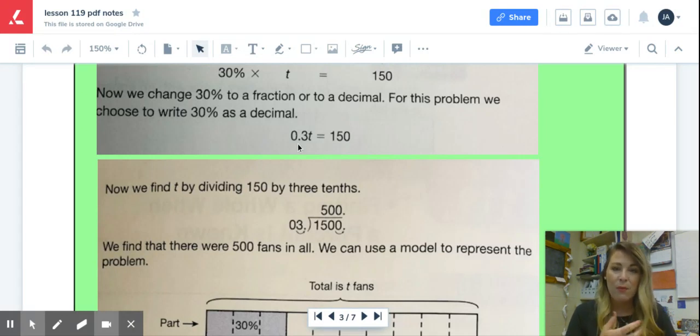So in this case now, in order to get t by itself, this is where it becomes a little bit like pre-algebra. In order to get t by itself, we need to divide by three tenths. Right now, t is multiplied by three tenths and to get rid of it, we have to do the inverse operation by dividing by three tenths. When we divide by three tenths over here on this side of the equation, it eliminates itself. But whatever we do on this side of the equal sign, we must do on this side.